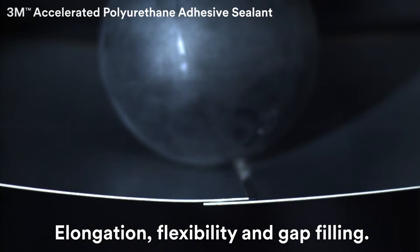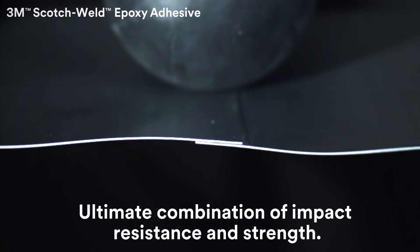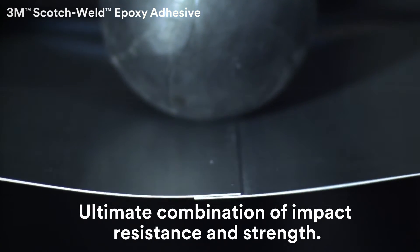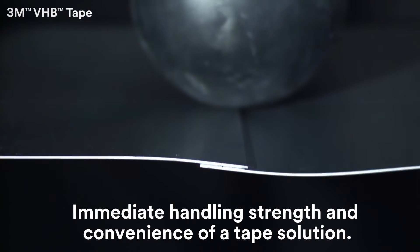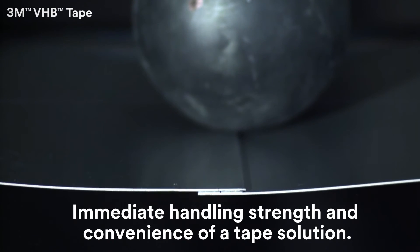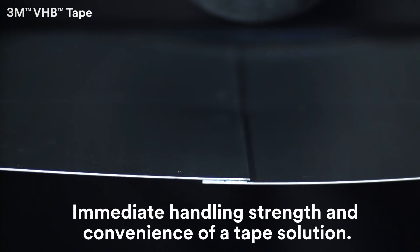For example, accelerated adhesive sealants have high elongation, flexibility, and gap filling capabilities, while toughened epoxies offer the ultimate combination of impact resistance and strength. Finally, VHB tapes provide the unique advantage of immediate handling strength, combined with the convenience and ease of use of a tape solution.